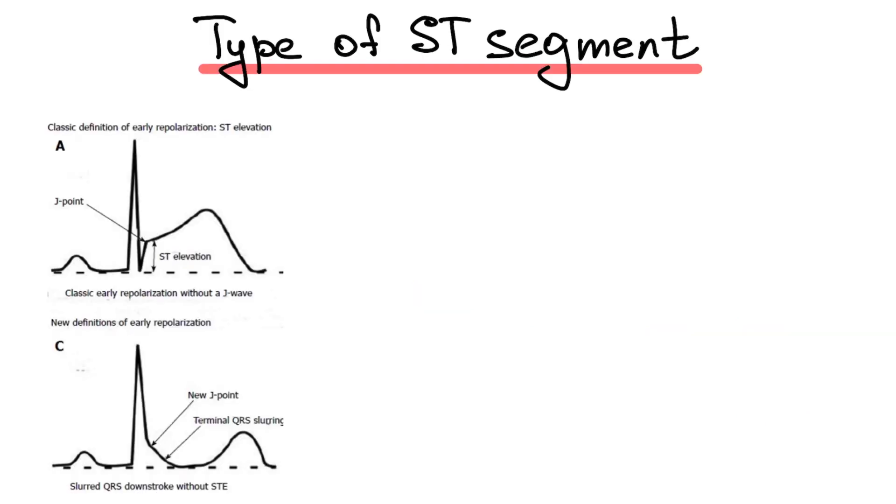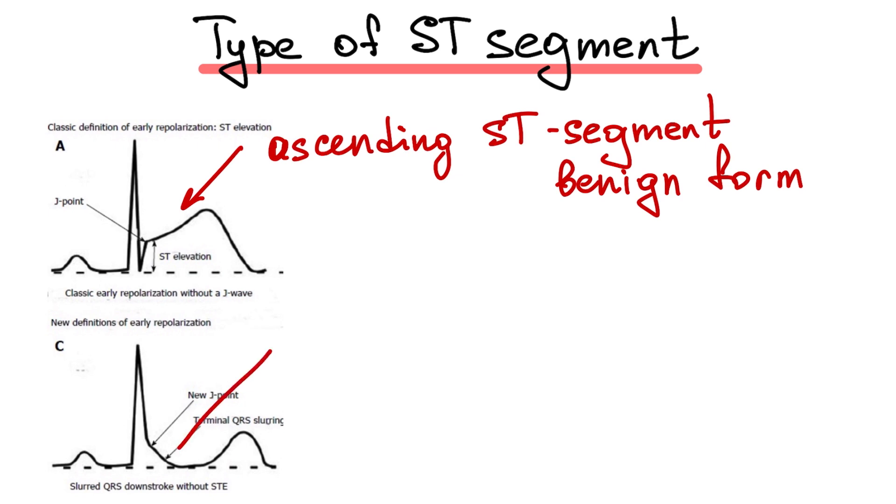The J-point with rapidly ascending ST-segment is considered a benign form of early repolarization. J-point with horizontal or descending ST-segment is considered a malignant form.